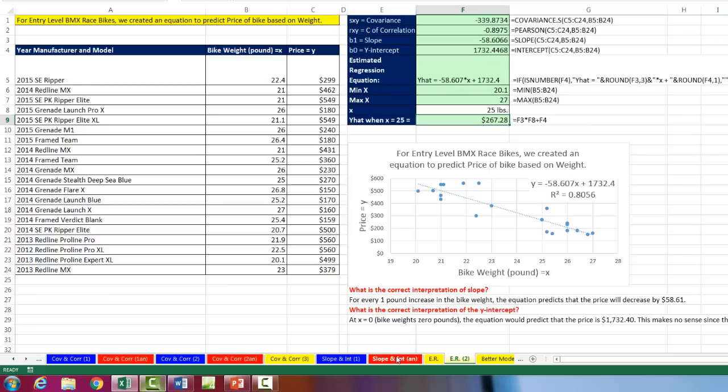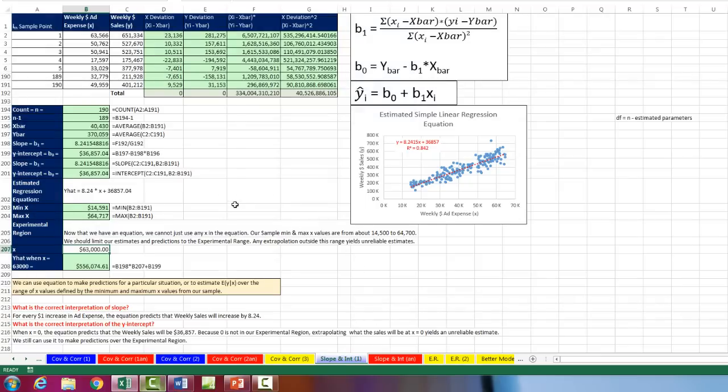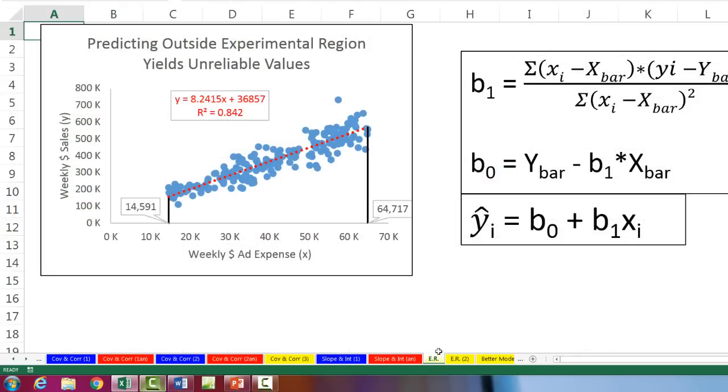All right, so in this video, we saw how to create an estimated regression equation. We saw the formulas for slope and y-intercept. And we also made sure that we talked about experimental range, the min and the max, for making predictions with our equation. All right, next video, we'll actually learn how to calculate a measure called r squared that will tell us the goodness of fit of the estimated equation line to the actual sample data points. All right, we'll see you next video.